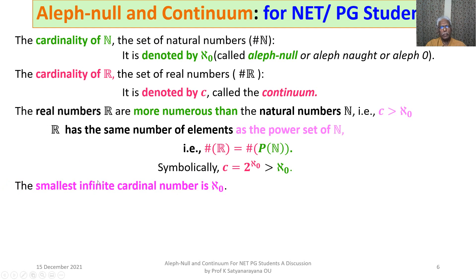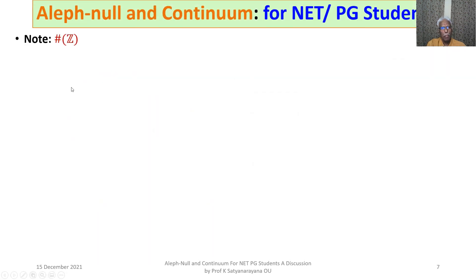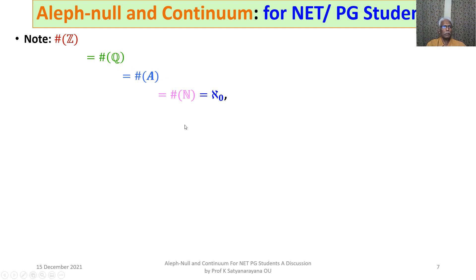The smallest infinite cardinal number is ℵ₀ and the second smallest is ℵ₁, which is C, the Continuum. Note: the cardinality of Z equals the cardinality of Q equals the cardinality of A, where A is the set of all algebraic numbers. They all have the same cardinality as the natural numbers, that is ℵ₀. Z, Q, and A are all equivalent sets, and thereby they have the same cardinality ℵ₀.